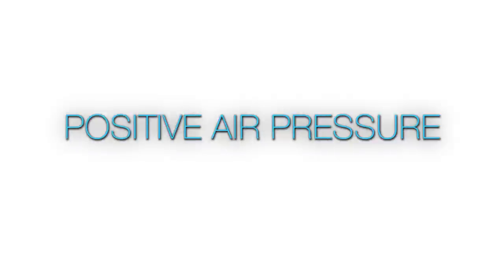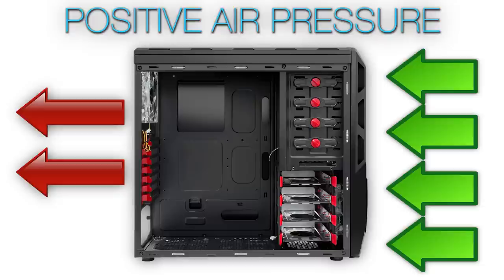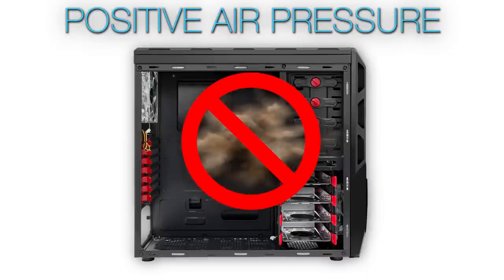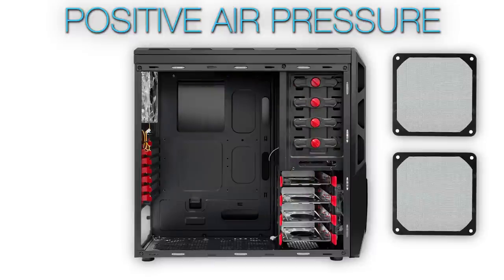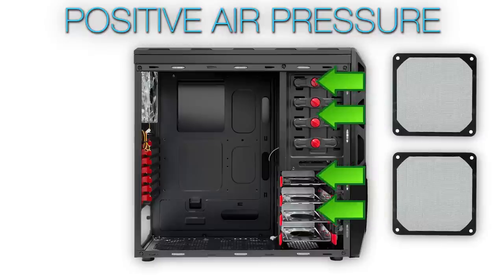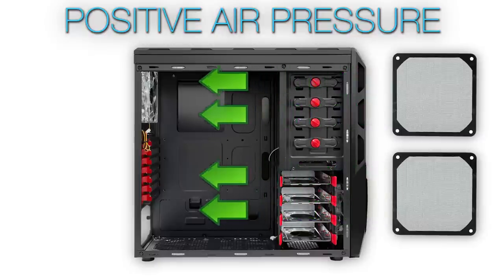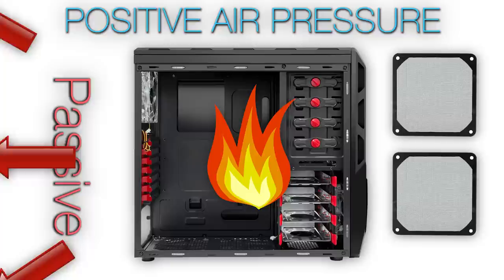Speaking of pressure, there are two types inside a case: positive and negative. Let's start off with positive first. Positive air pressure is when you have more air coming into the case than you do leaving it. It's known for being an excellent defense against dust, but you will need a fan filter over every single air intake. The idea is that by filtering all of your intakes, only clean dustless air gets inside your case. Once it's inside, hot air will passively escape through any holes or gaps that are not filtered.